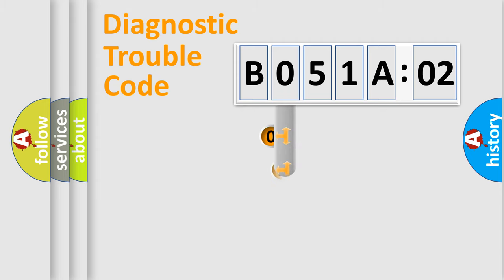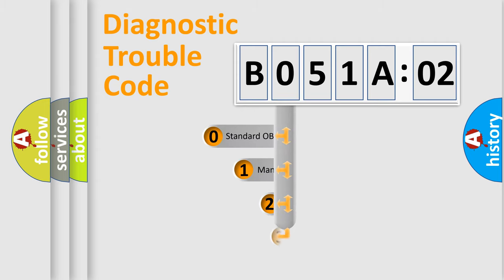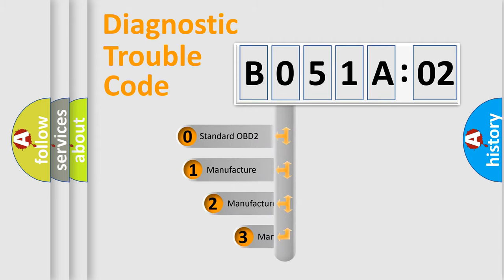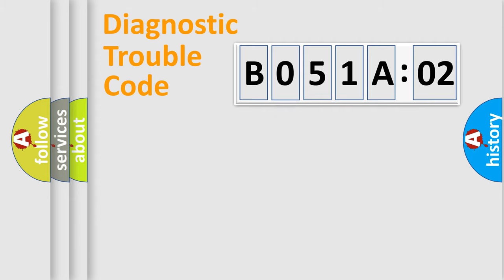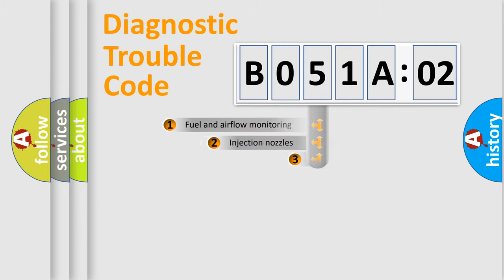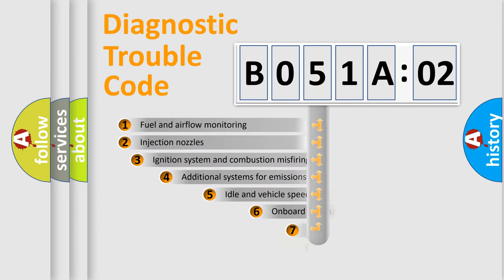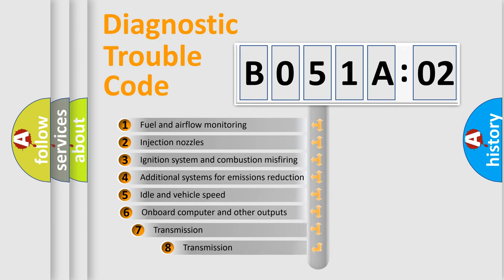This distribution is defined in the first character of the code. If the second character is expressed as zero, it is a standardized error. In the case of numbers 1, 2, or 3, it is a more specific expression of a car-specific error.